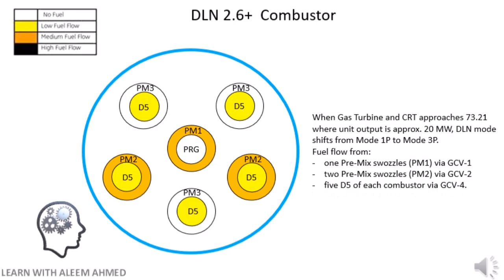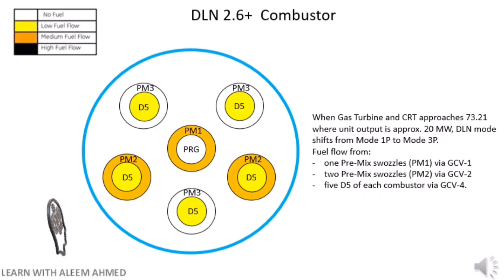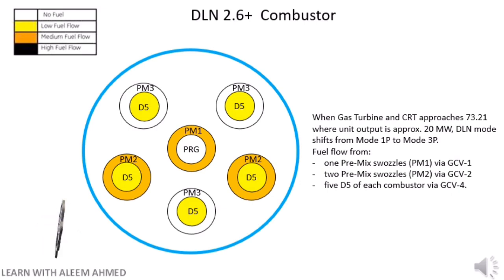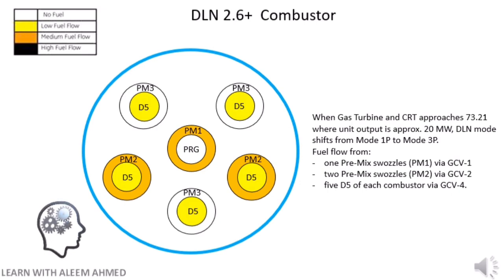When the gas turbine CRT approaches 73.21, where the unit output is approximately 20 megawatts, the DLN mode shifts from mode 1P to mode 3P. At this change, fuel will flow from 1 premix swazzle PM1 via GCV1, 2 premix swazzles PM2 via GCV2, and 5 D5 circuits of each combustor via GCV4.